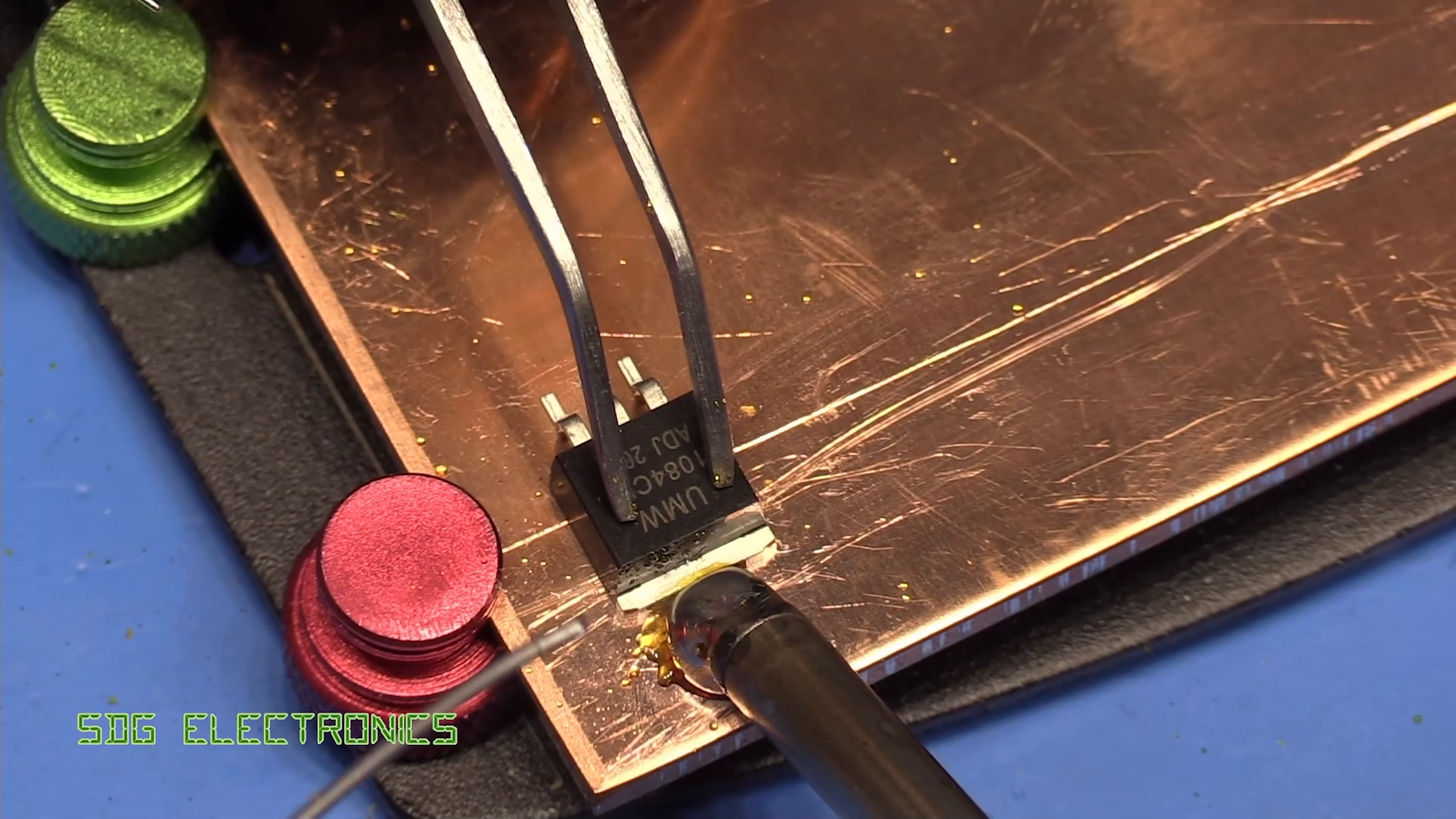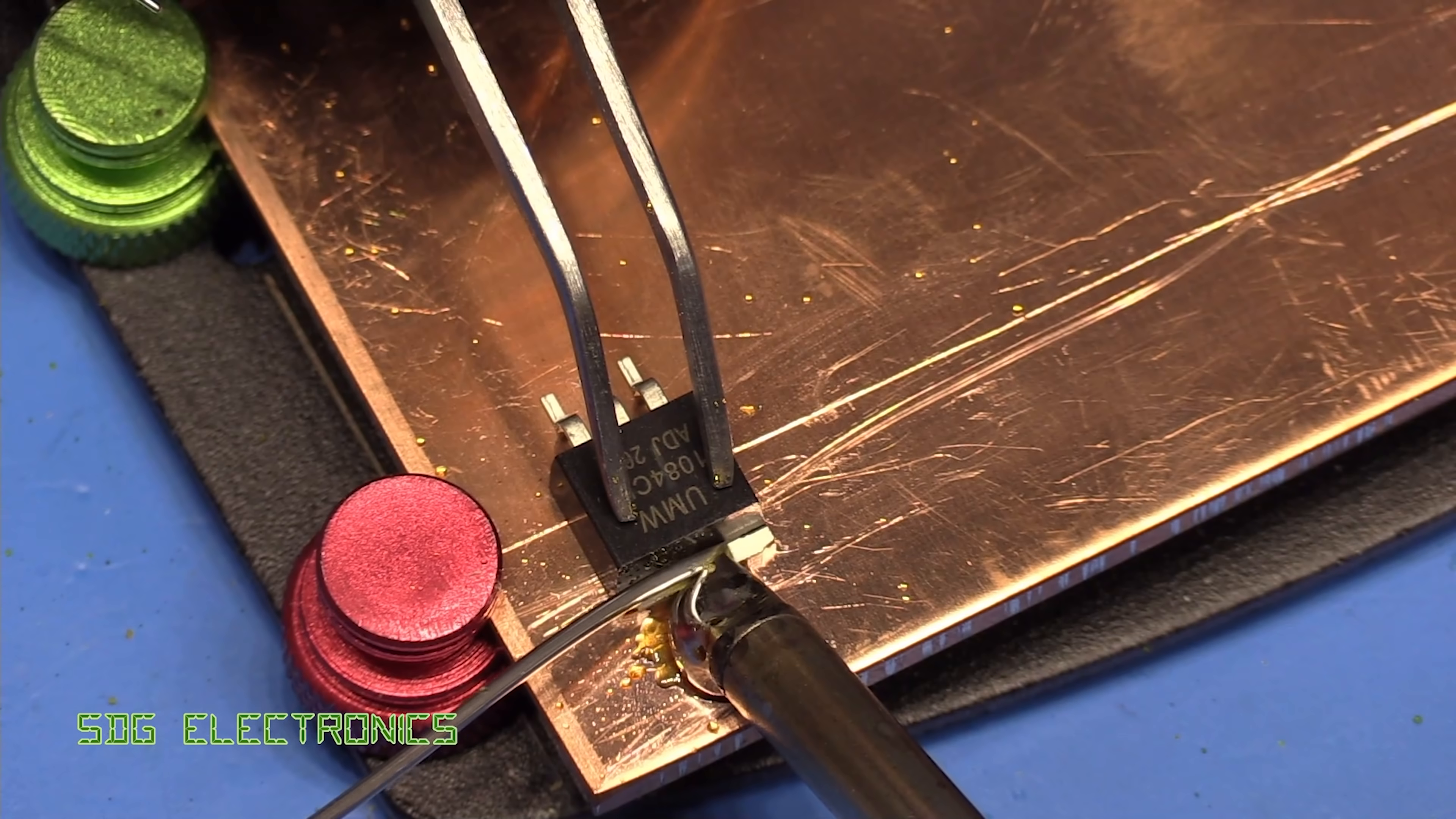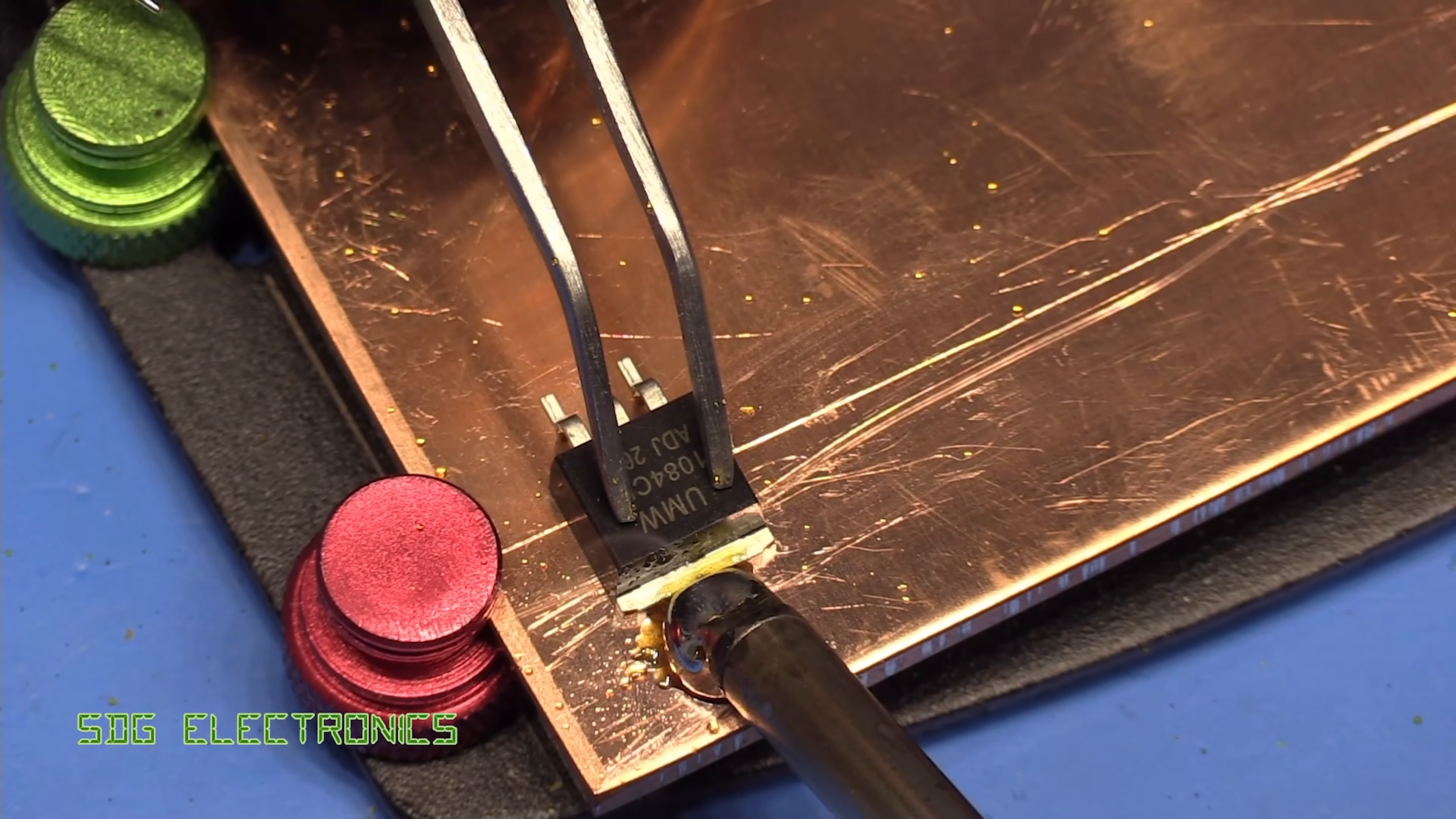We're delivering maximum power here. The power meter on the front of the unit is reading 80 watts right at the very top. It's not yet flowed onto the copper, as you can see.